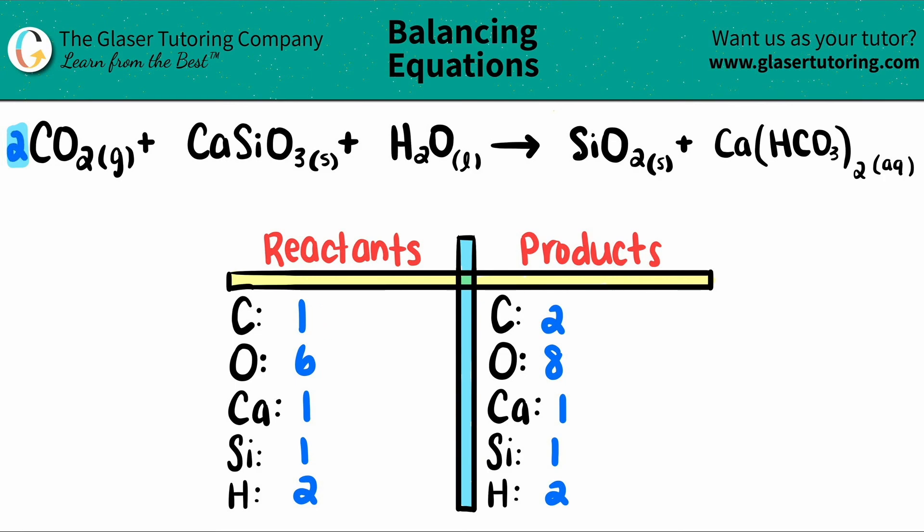So that number is going to change. There's two carbons here. So this cancels to a two, but you got to be fair. If you put a coefficient in front of a compound, that two gets distributed to all of the elements. So you have to change the carbon number, which we did, and we have to change the oxygen number.